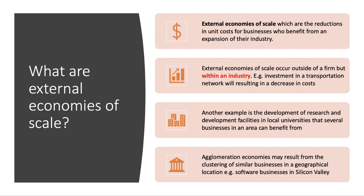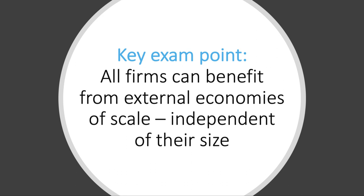Another good example: within a town or city, a local university increases investment in research and development facilities, and those are made available in partnership with local businesses. A very good example of external economies of scale are so-called agglomeration economies, which come from the clustering of similar businesses in a tight geographical location. Software businesses in Silicon Valley is a common example. An important exam point: all firms can potentially benefit from external economies of scale, pretty much independent of their size.